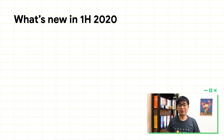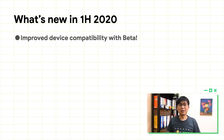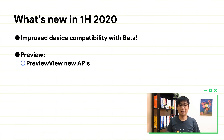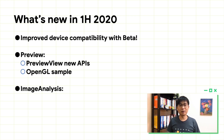Now you know what benefits KMAS offers, let's talk about what's new in the first half of 2020. Device compatibility is always our first priority, and we have put a lot of effort into fixing device issues and improving test lab infrastructure in terms of gear and test coverage. For the preview, we have added more API to PreviewView in order to satisfy developers' needs. And for advanced developers, we added an OpenGL sample on the repository.